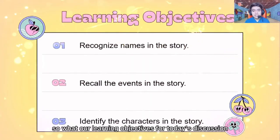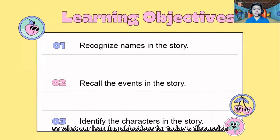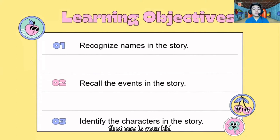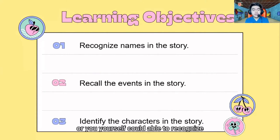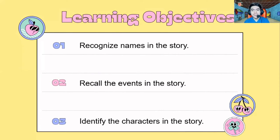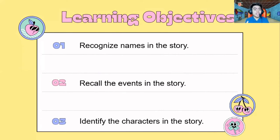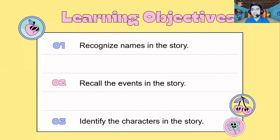So what are our learning objectives for today's discussion? First, your kid or you yourself should be able to recognize the names in the story, recall the events in the story, and identify the characters in the story.